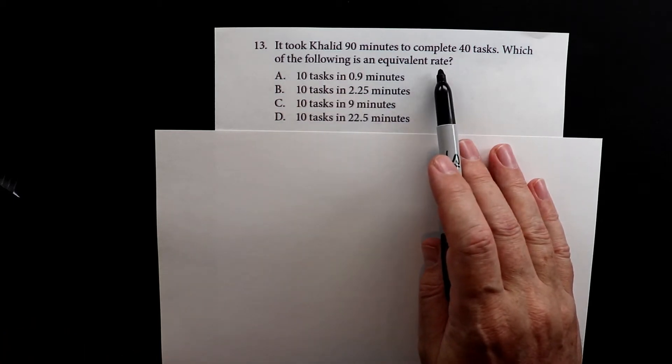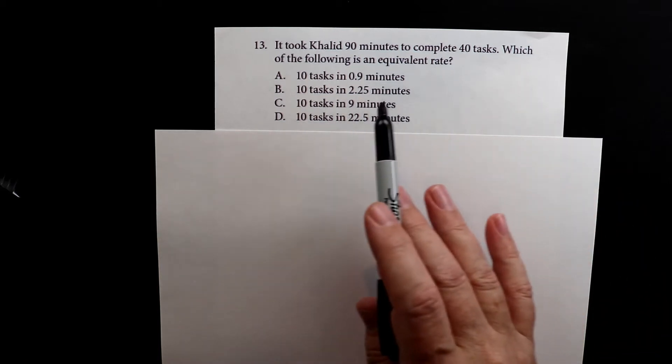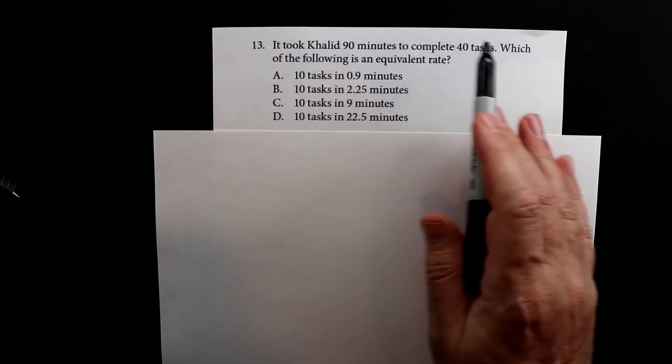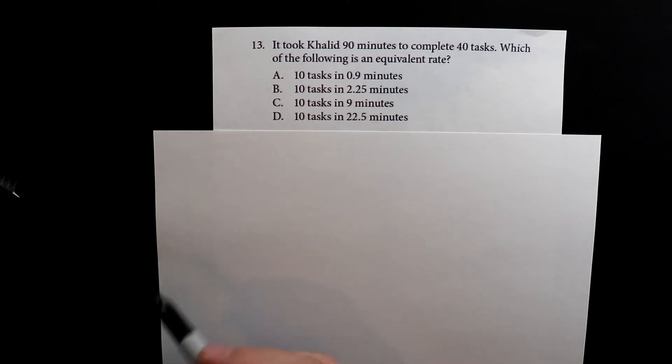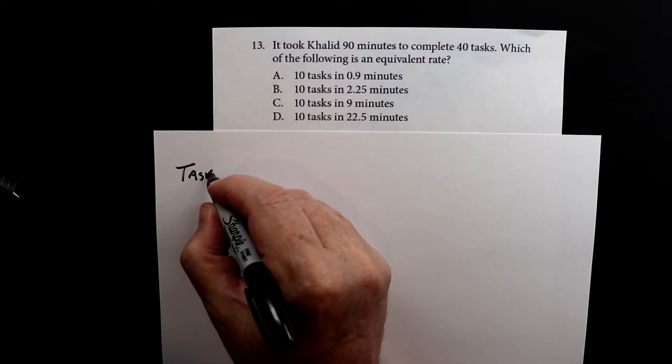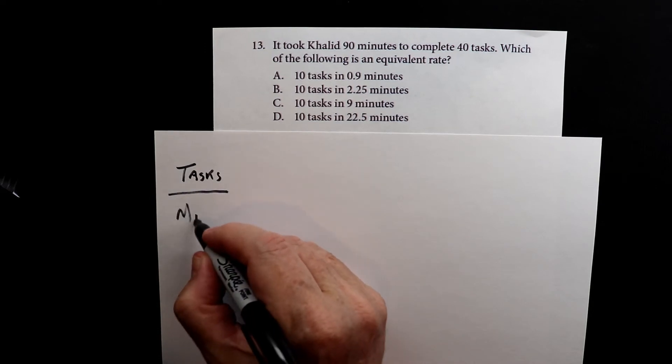It says rate, but this is more of a proportion problem. So let's set this up. We have minutes and tasks. Now we can set it up as minutes on the top or tasks, it doesn't matter as long as you're consistent.